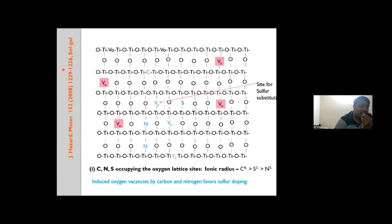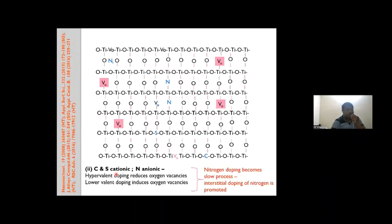The rarest report — achieved by the sol-gel method and the only one so far — shows all dopants at anionic oxygen sites. The second common mode is carbon and sulfur at cationic sites and nitrogen at anionic sites. When sulfur exhibits the S6+ state, oxygen vacancies decrease. Carbon at cationic sites is isovalent and will not change the oxygen vacancy structure.